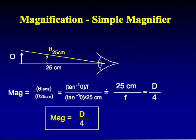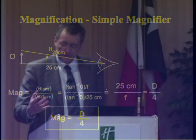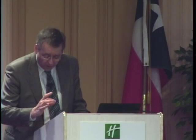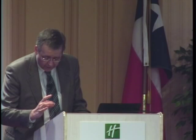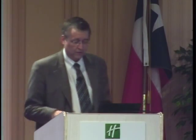For example, a 20 diopter lens used as a hand magnifier gives 20 over 4 equals 5x — the ant appears five times bigger through the magnifier than it would if you held it 25 centimeters from the bare eye.